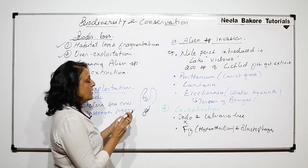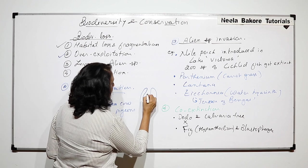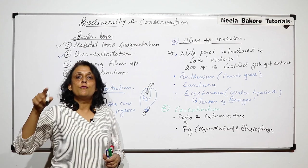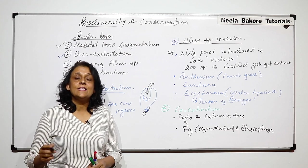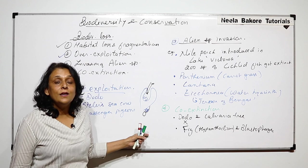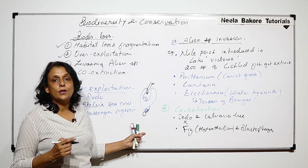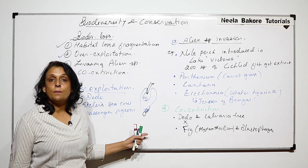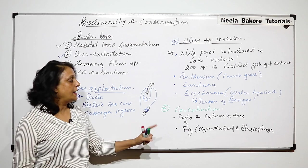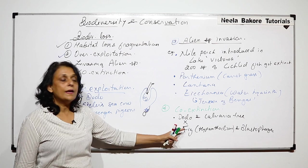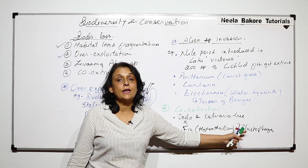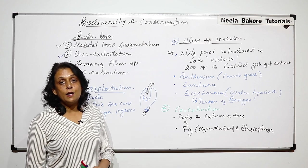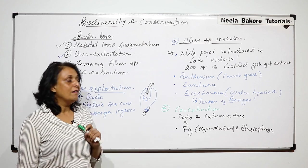When the wasp goes out and comes in for laying the eggs, moving from one hypanthodium to the next, it is going to bring the pollens from the other hypanthodium. That means it is helping in cross-pollination. The relationship is such that if fig is not there, Blastophaga will not be able to reproduce, and if there is no Blastophaga, pollination and fertilization will not take place in fig or Ficus.